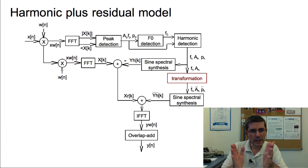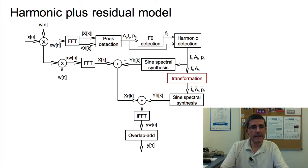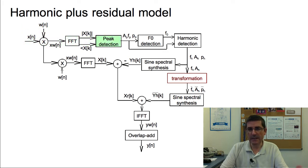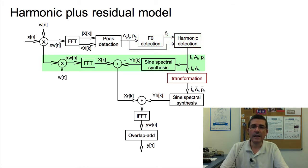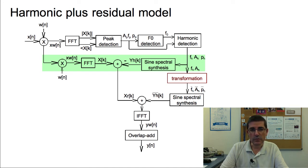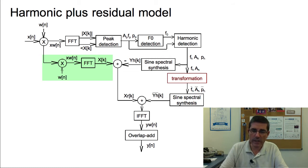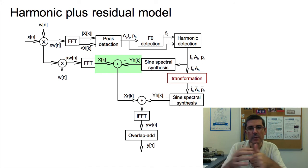Let's start with the harmonic plus residual model. This is the block diagram that we have seen before, in which from the input sound we analyze the spectrum, find the peaks, then find the fundamental frequency, find the harmonics, and we subtract those harmonics from the original signal. We need to compute the spectrum of the original signal again in order to develop a spectrum from which we can subtract these harmonics in a proper way.